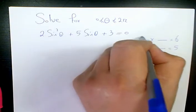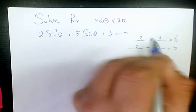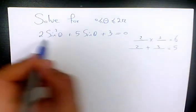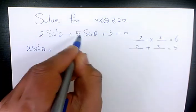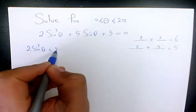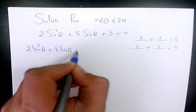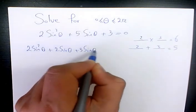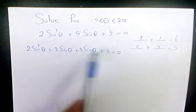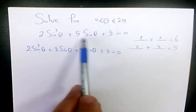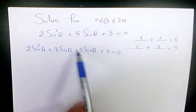Then I rearrange this equation. It will be 2 sine squared theta plus 5 sine theta, which is going to be 2 sine theta plus 3 sine theta, plus 3 equals zero. So instead of 3 terms, now I have 4 terms. The 5 sine theta becomes 2 sine theta plus 3 sine theta.